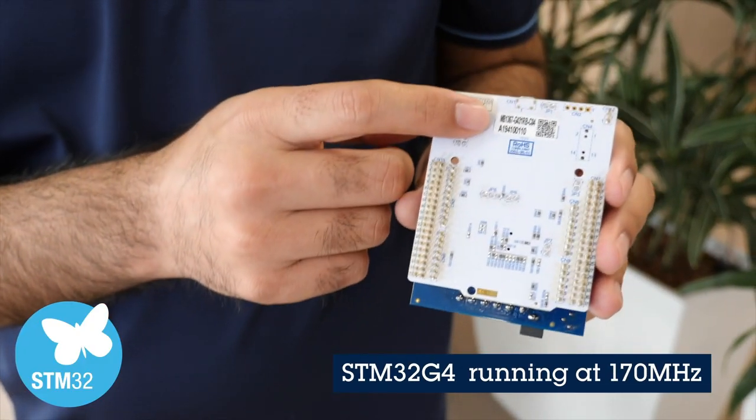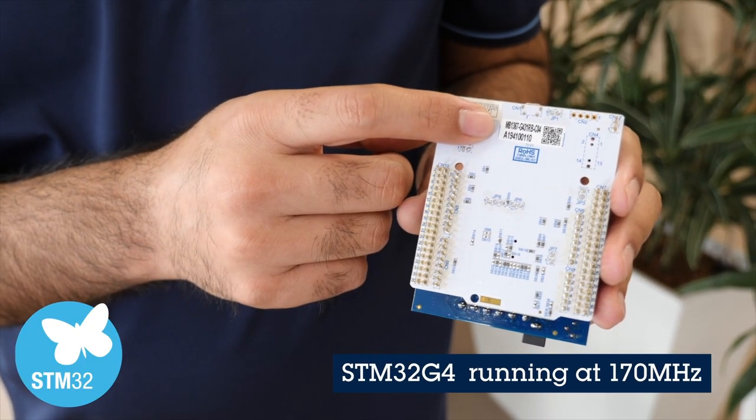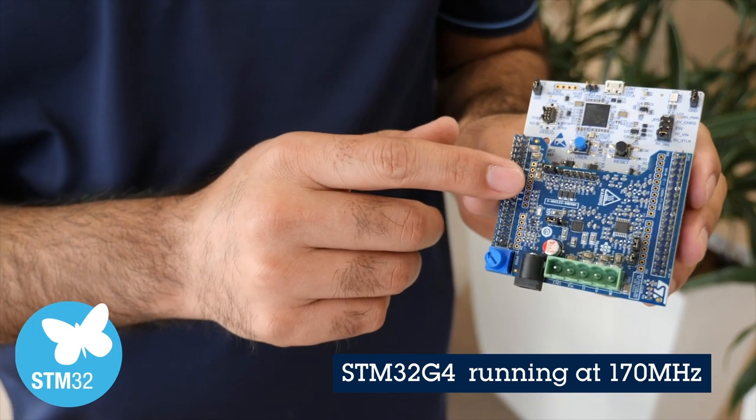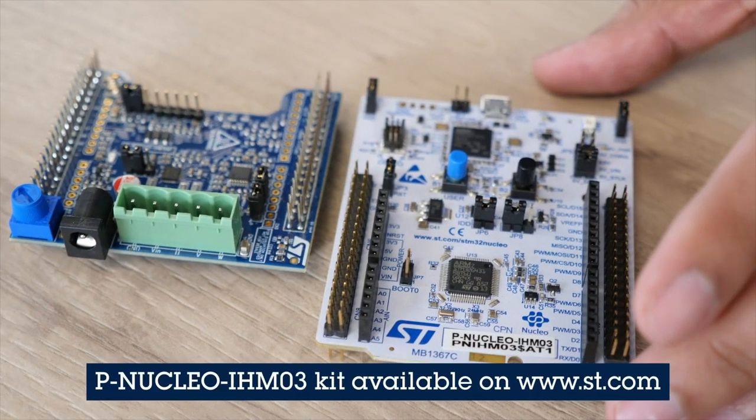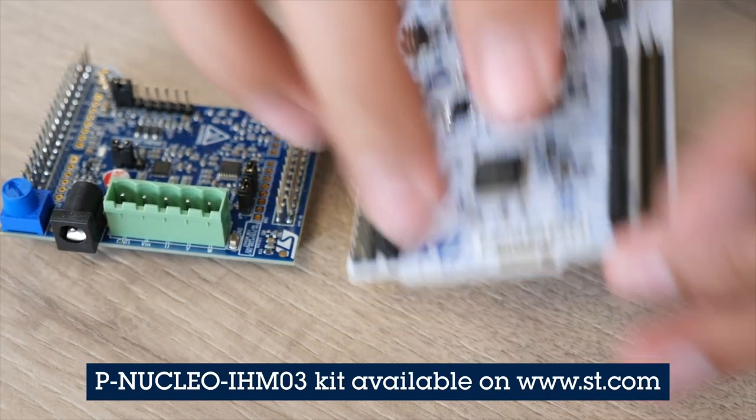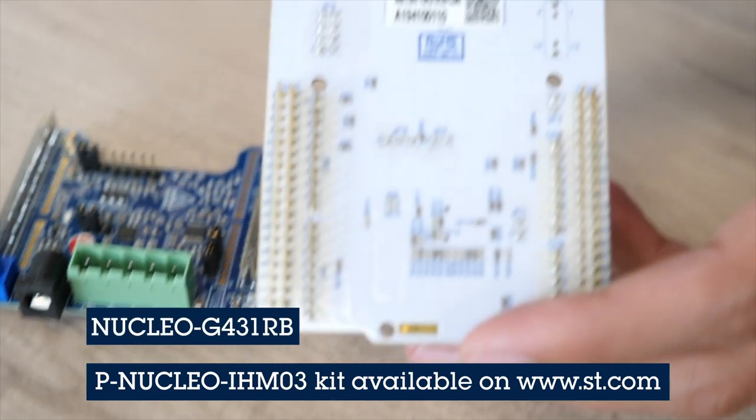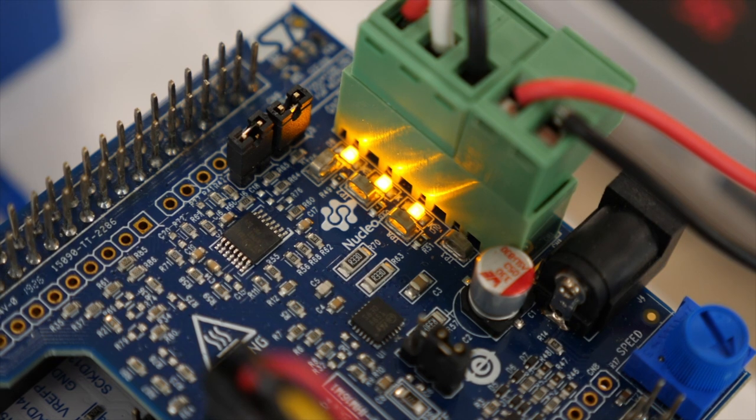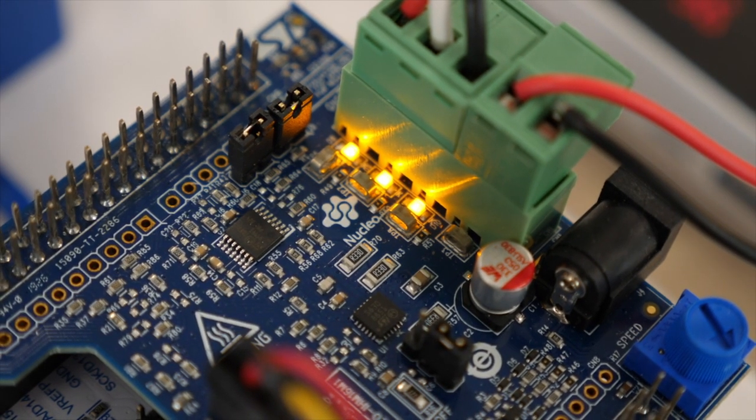This demo uses an STM32G4 microcontroller running at 170 MHz, which is one of our well-known family for motor control applications. More precisely, we are using P-Nucleo-IHM03 motor control Nucleo pack with the Nucleo G431RB, one of the smallest Nucleo in G4 family. It embeds 128 KB of flash memory and 32 KB of RAM.